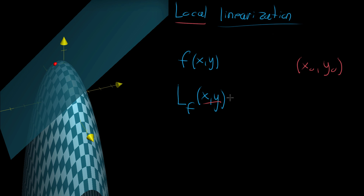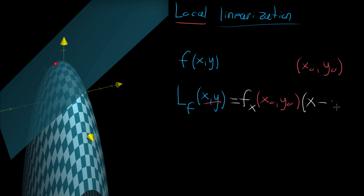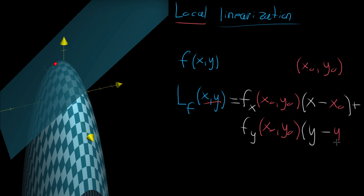To remind us where we were: the way you do this local linearization is you first find the partial derivative of f with respect to x — I'll use subscript notation — and evaluate it at x₀, y₀, the point about which you're approximating. Then you multiply that by (x minus x₀). Then you add the same thing with y: take the partial derivative with respect to y, evaluate it at the input point, and multiply it by (y minus y₀).